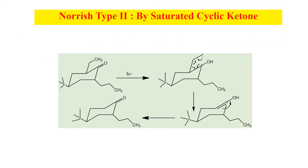Here is another example. The hydrogen from this methyl group is shifted to the oxygen, then this bond is broken down and alkene is eliminated. This enol form is then converted into the keto form.